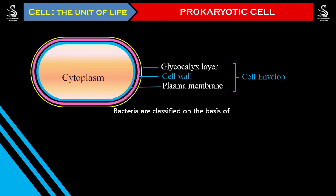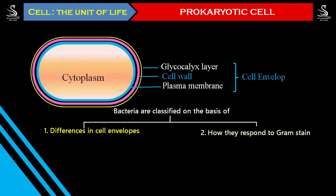Based on the nature of the cell envelope, we classify organisms into different groups. To classify bacteria we consider two criteria: first, differences in cell envelopes, and second, how those organisms respond to Gram stain. The cell envelope — made up of plasma membrane, cell wall, and glycocalyx layer — varies from organism to organism. We find two different types of arrangements in these layers.